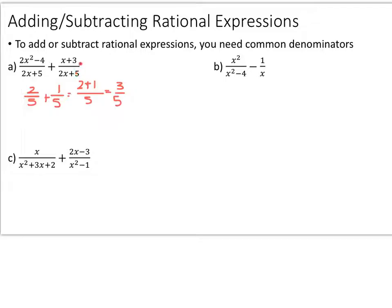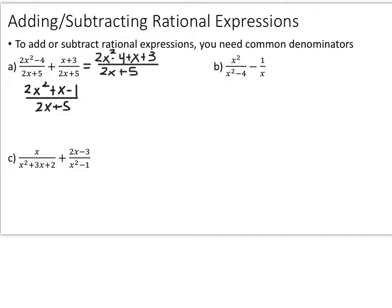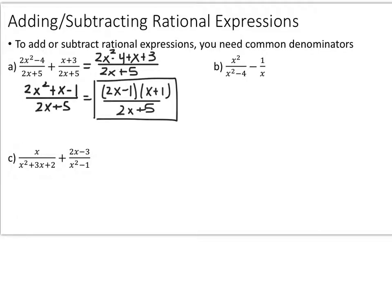The same idea applies when you have rational expressions. Here I have a common denominator already, so I don't need to do anything special — just keep that common denominator and add straight across. You end up with 2x squared minus 4 plus x plus 3, which simplifies to 2x squared plus x minus 1 over 2x plus 5. Just like with regular fractions, you want to reduce at the end if possible. The numerator factors into 2x minus 1 times x plus 1 over 2x plus 5, so there's nothing to simplify — that's just the final answer.